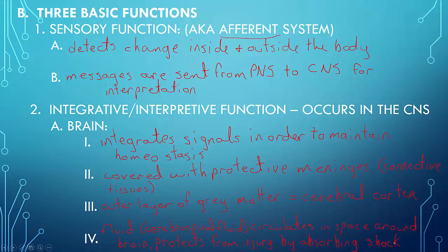So again, these four things are the things that the brain part of the central nervous system does. They integrate signals in order to maintain homeostasis. It is covered with protective meninges, which is connective tissue. The outer layer of grey matter is called the cerebral cortex. And there is a fluid going around in the space around the brain which protects from injury by absorbing the shock when you get a light blow to the head. This does not mean that any blow to the head is going to be protected from, because of course we know that you can have a concussion.